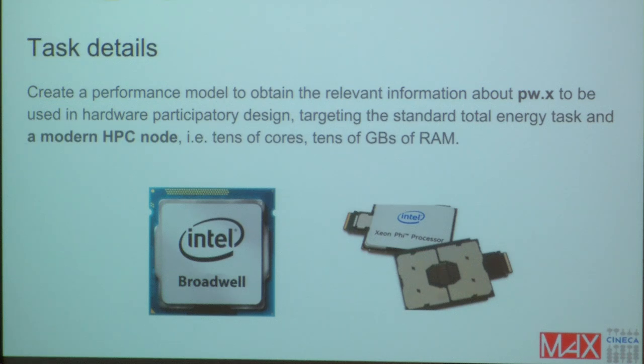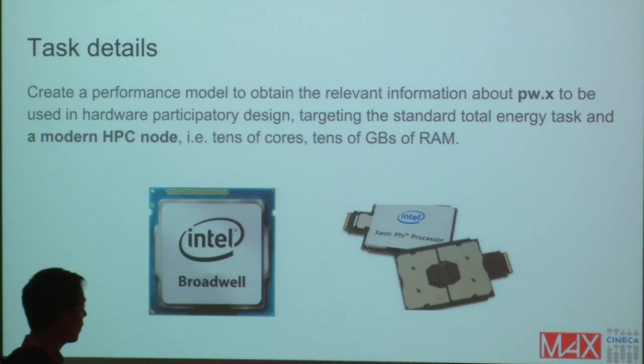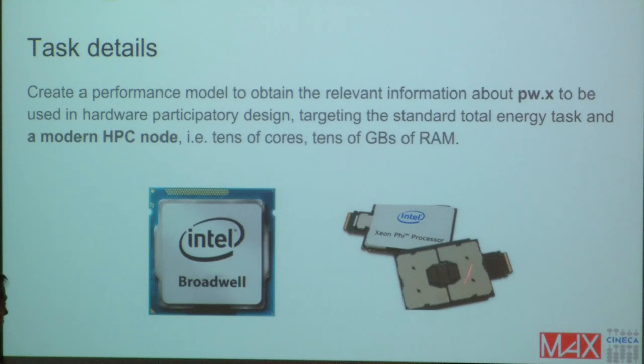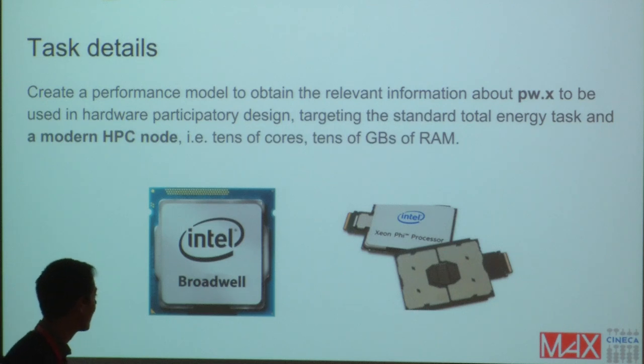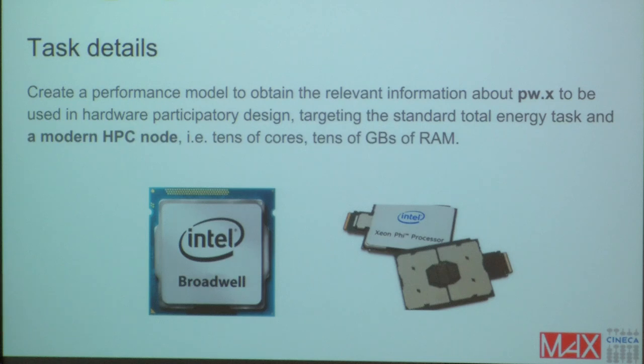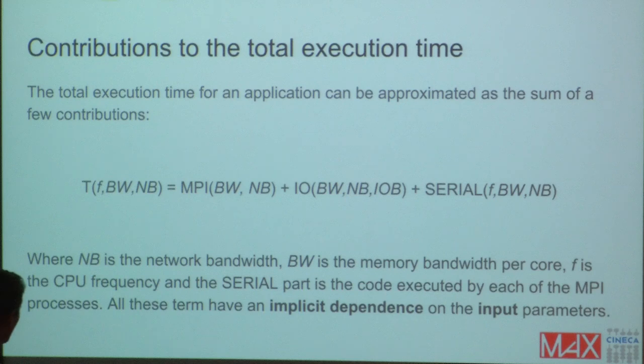To create a performance model that could answer at least in part to these problems, we started focusing on the PW kernel and we targeted in this first stage a single modern HPC node. What I mean with this is a node with tens of cores and tens of gigabytes of RAM. More precisely in this presentation I will present the results obtained on the Broadwell core and on the Xeon Phi processor. Unfortunately it will be no longer followed by a new architecture but still interesting to check what the model will give also on this processor.